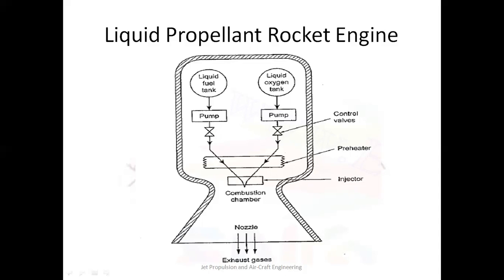Liquid fuels such as refined petrol, liquid hydrogen, and liquid oxygen are used in this engine, stored in two separate tanks. A preheater is used to heat the fuel and oxidizer before they reach the combustion chamber. The nozzle is used to increase velocity and decrease pressure. Now let's understand the working of the liquid propellant rocket engine.